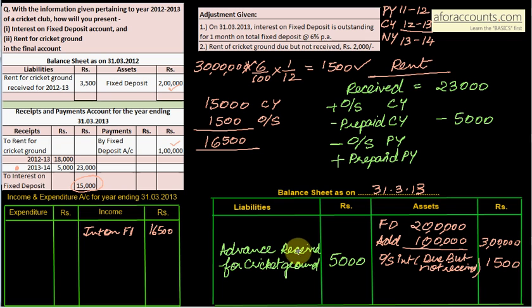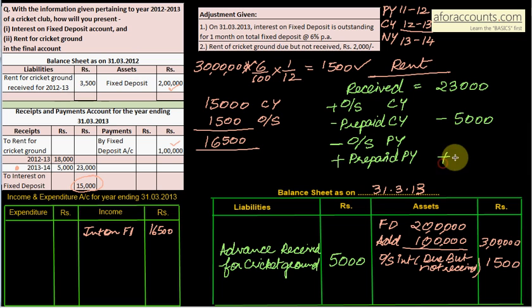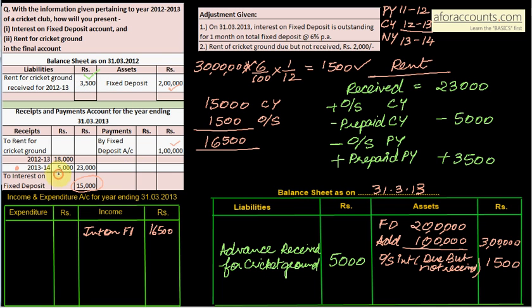From the balance sheet extract: rent for cricket ground received in advance for 12-13 is 3,500 — meaning last year (11-12) had already received 3,500 for the current year 12-13. This is the previous year's prepaid, which we always add. So add 3,500. This does not affect the current balance sheet — only current year outstanding or prepaid adjustments appear there.